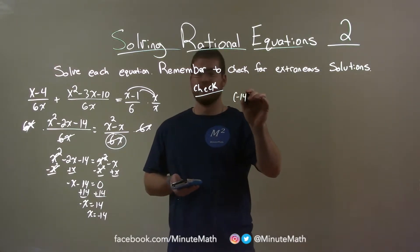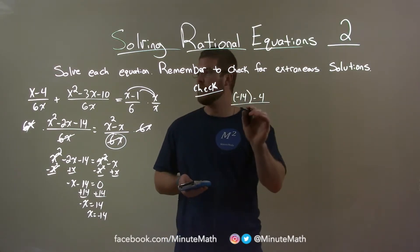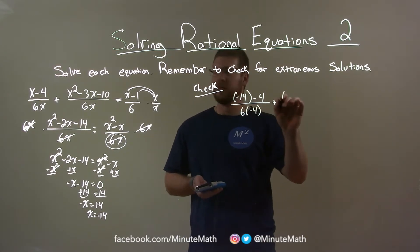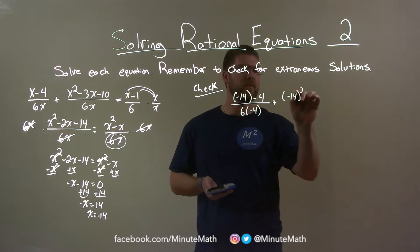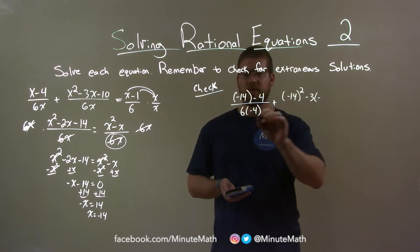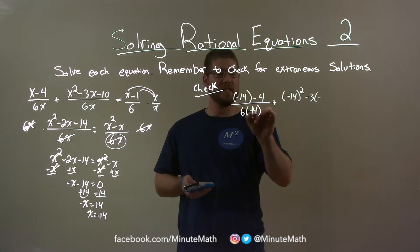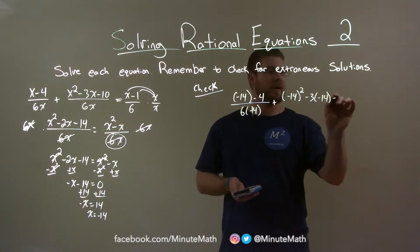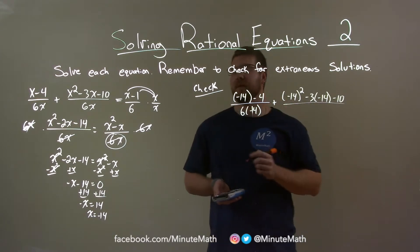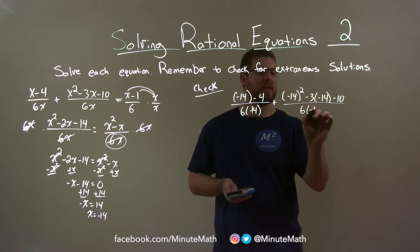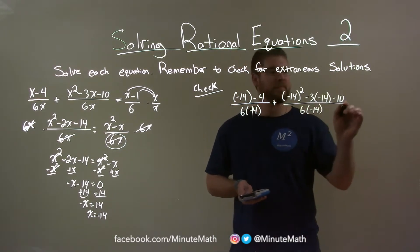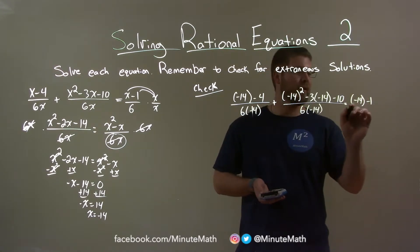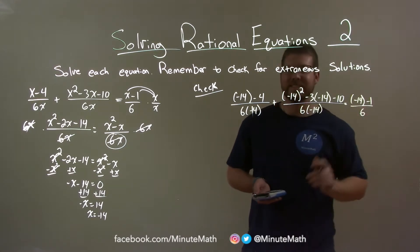Negative 14 minus 4 over 6 times the minus 4 plus negative 14 squared minus 3 times the negative, oh, see again, negative 14. Don't forget that, 14. Minus 14 minus 10. If you caught that, let me know in the comment section. 6 times negative 14 equals negative 14 minus 1. Why do I say 14 weird? Over 6.